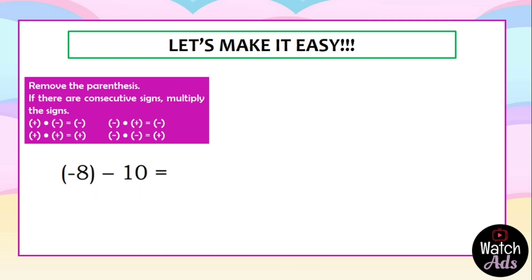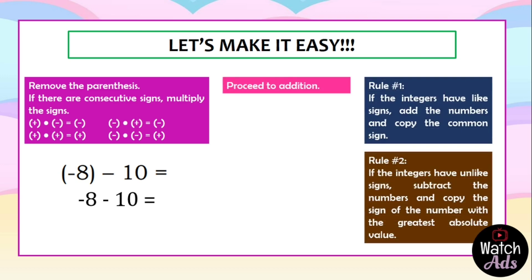Some more examples: negative 8 minus 10. We remove the parenthesis — we have negative 8 minus 10. We don't have consecutive signs here, so we proceed to addition: negative 8 plus negative 10. They are like signs — we just add them and copy the common sign. The final answer is negative 18.